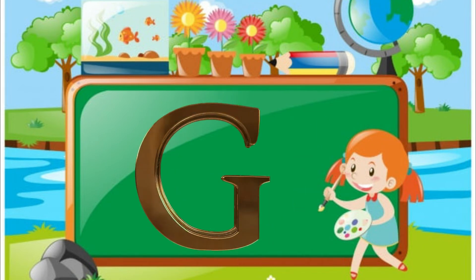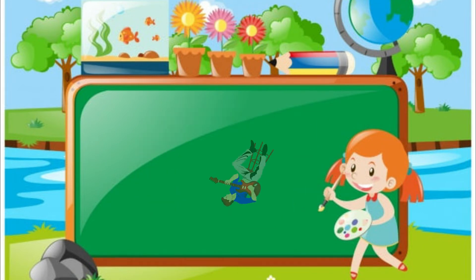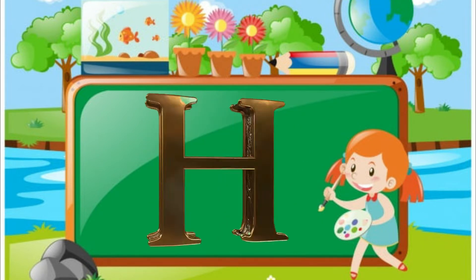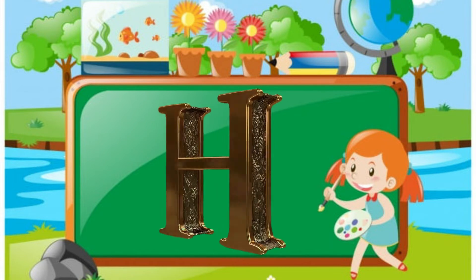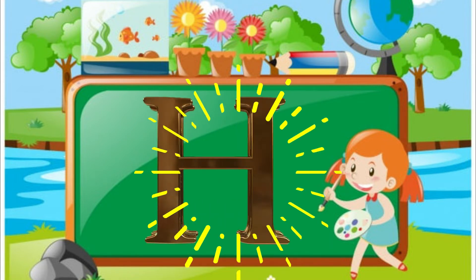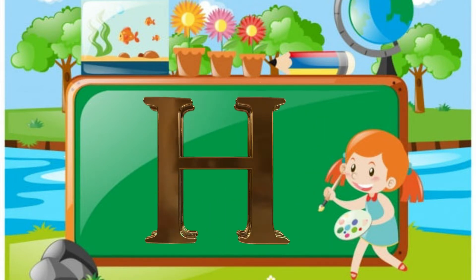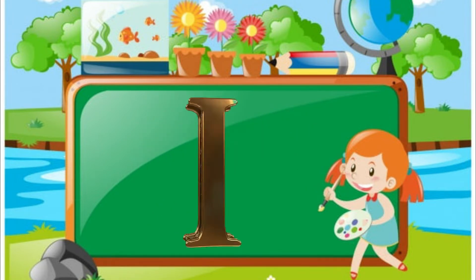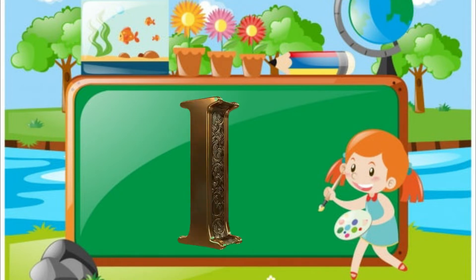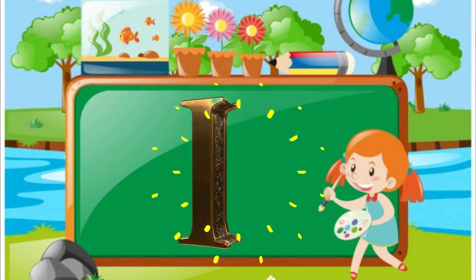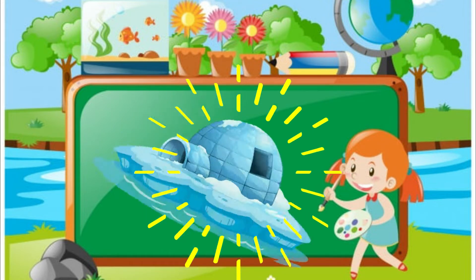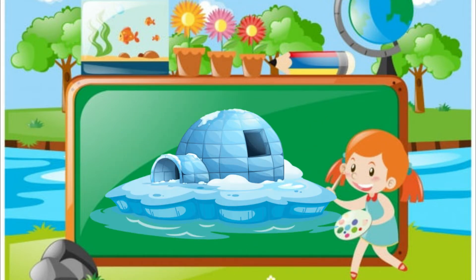G. G for geater. H. H for hen. I. I for igloo.